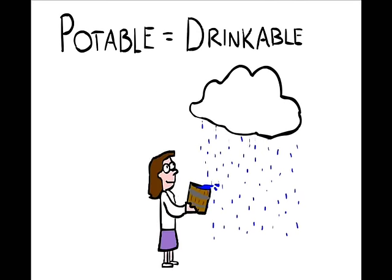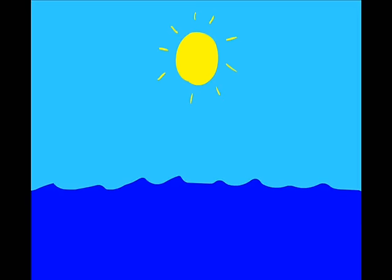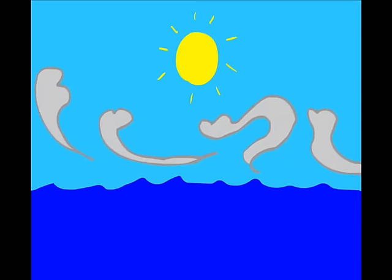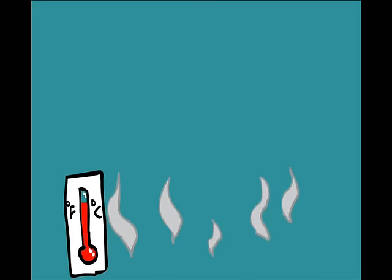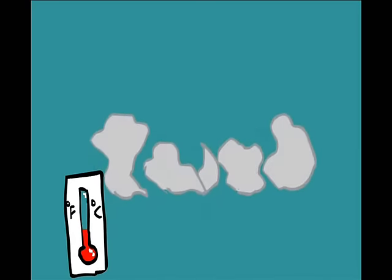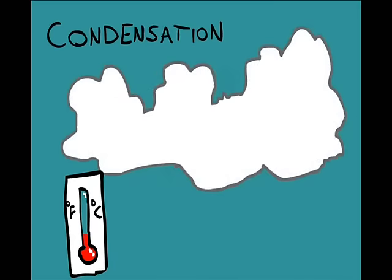Eventually, that vapor leaving the oceans will turn back into water, and it will become potable. Potable! That means you can drink it! And how do we get from vapor back to water? The same energy from the Sun that created evaporation also creates wind that moves air around the globe. As the air containing this water vapor rises, it cools, and the vapor begins to condense into clouds. This is referred to as condensation.